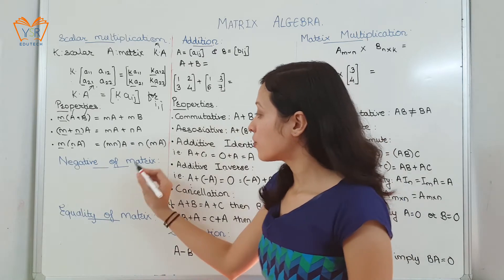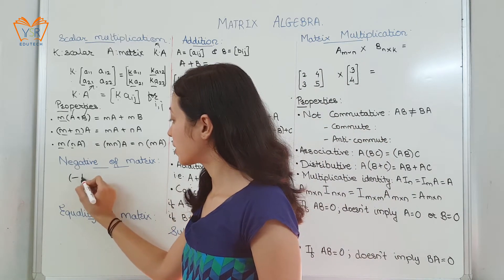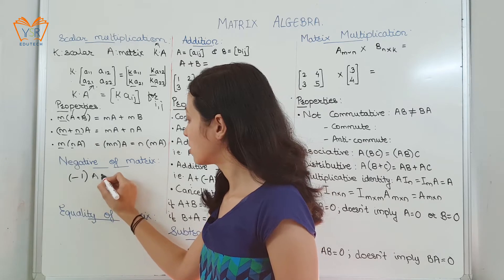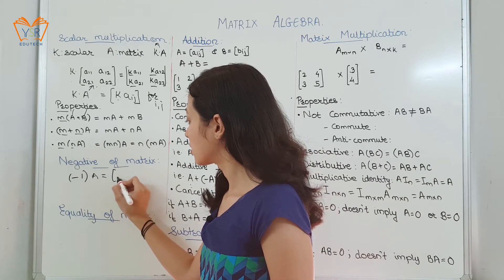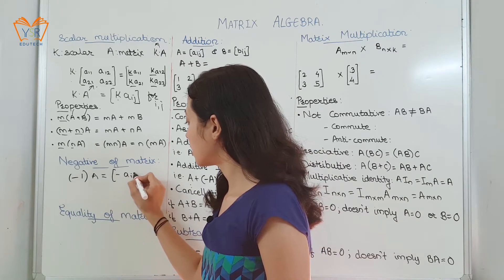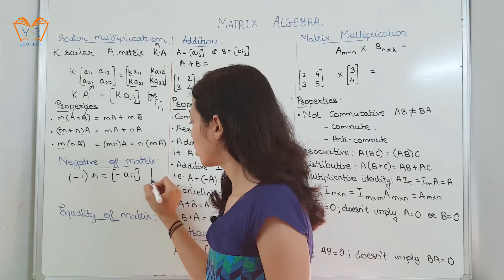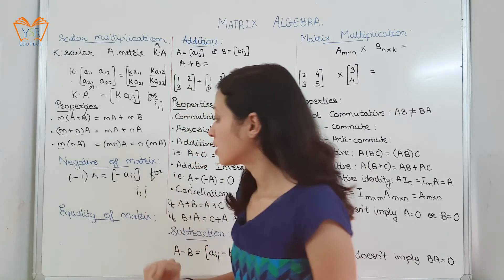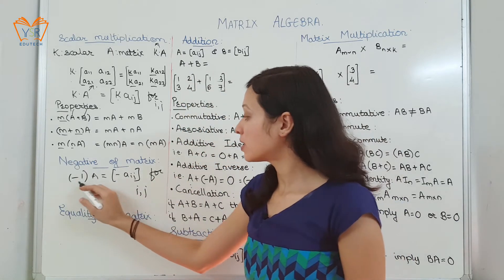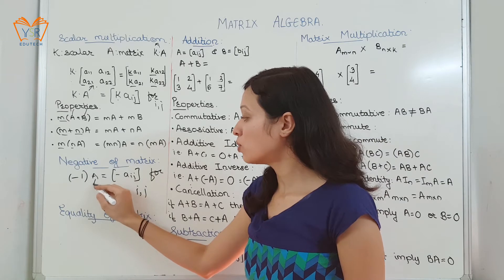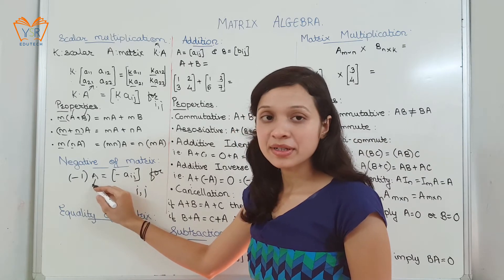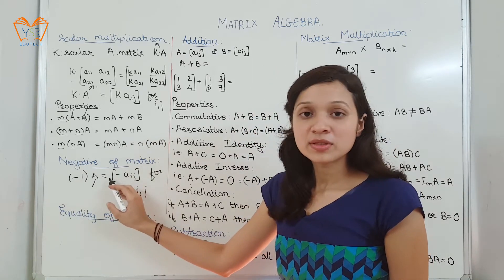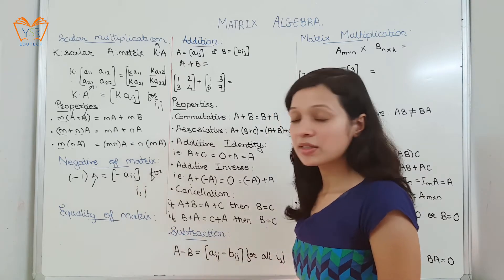Negative of a matrix: we can write minus 1 into a gives minus a_ij for all i,j elements. That is, whenever minus 1 is multiplied to any matrix, for example a, all the elements will have a negative sign.